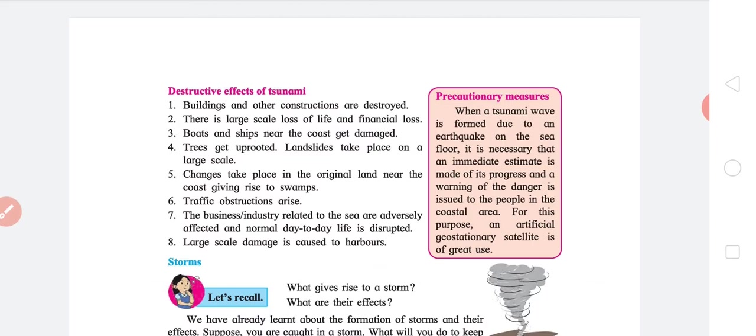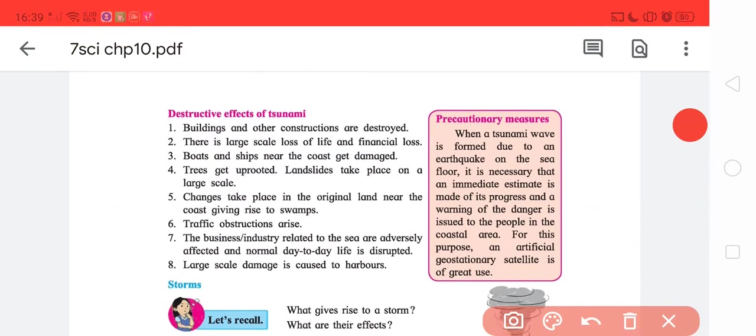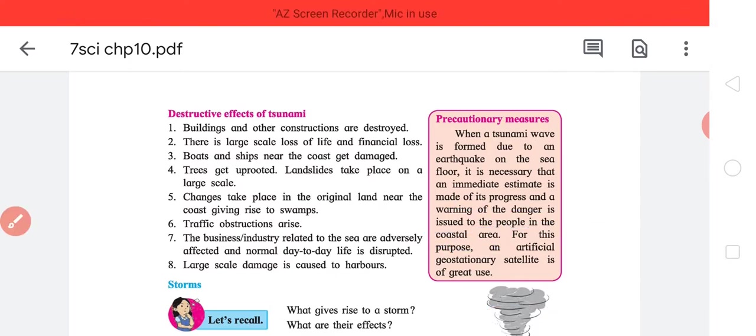What is the precautionary measure? What we do is it's possible to predict the tsunami. Warning of danger is issued to the people in the coastal areas. For this purpose, a geostationary satellite is used.